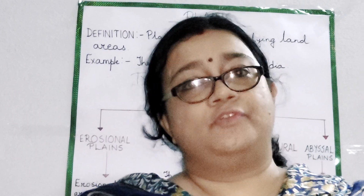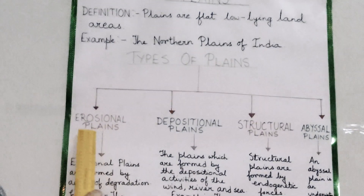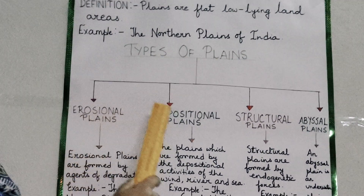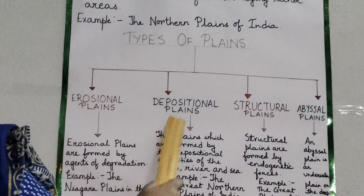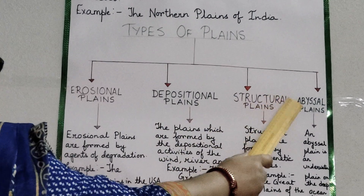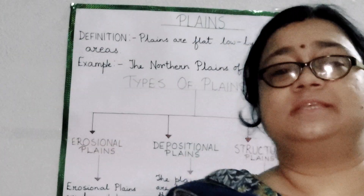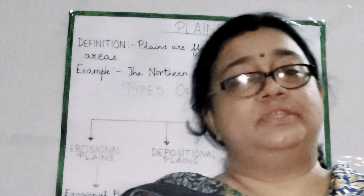Plains are classified into different types. Follow the chart: Erosional Plains, Depositional Plains, Structural Plains, and Abyssal Plains. Here I am going to discuss each type of plain with examples.